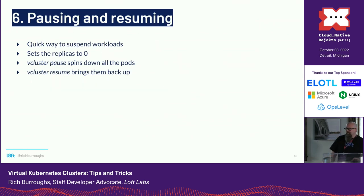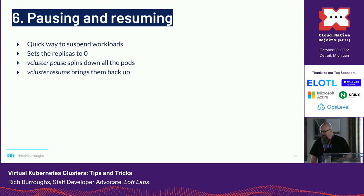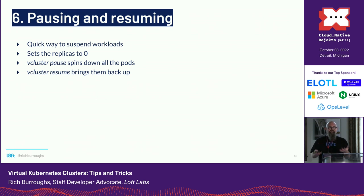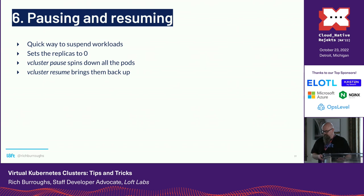Number six: pausing and resuming. This is a quick way to suspend workloads instead of throwing the cluster away. What it does is set the replicas to zero. vCluster itself is a stateful set, so it does this for the workloads you create — deployments and things — and for vCluster itself. All the pods just go away, but everything is still configured. When you resume, it spins back up all the pods again. Use this if you want to get rid of running workloads without losing all your state.